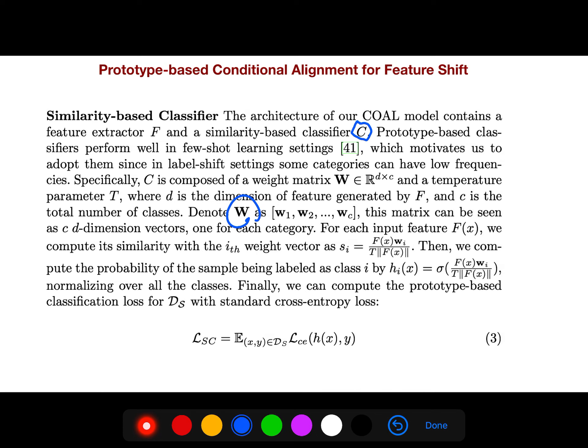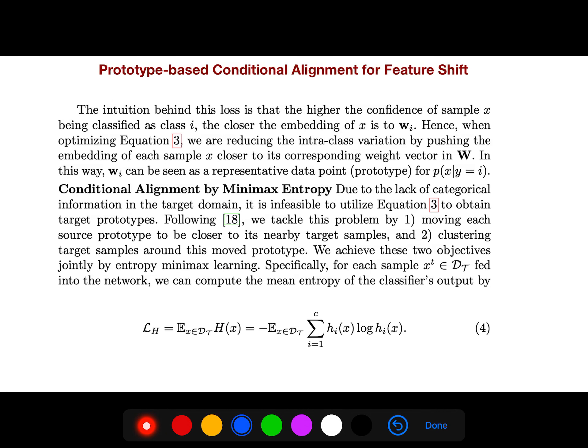So this matrix can be seen as C D-dimensional vectors for each category. So we can compute the prototype-based classification loss with just your standard cross-entropy. But the intuition behind this loss is that the higher the confidence of the sample X being classified as class i, the closer the embedding of X is to W sub i.